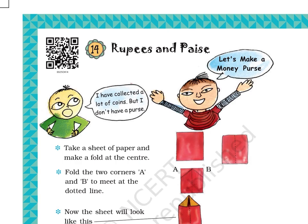Step 1: Take a sheet of paper and make a fold at the center. The picture at the right-hand side shows two images: Image 1 is of a blank sheet of paper; Image 2 shows a dotted line at the center from where the fold was made.